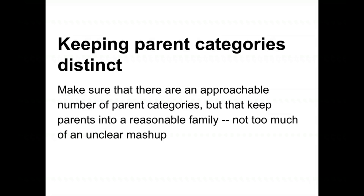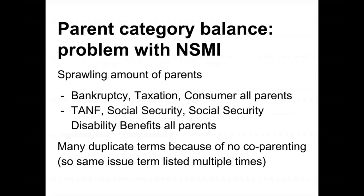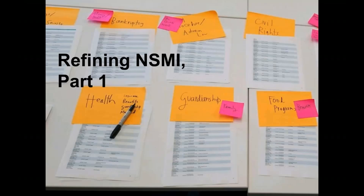The third factor is balance — having a good comprehensive amount of parent families without mashing them up too much. Right now NSMI has a pretty sprawling amount of parents: bankruptcy, taxation, and consumer are all separated; benefits are separated into different parent categories, like social security and social security disability being totally separate. If you go to NSMI's website, there's a very long list at the parent level, which makes it unapproachable. We've been thinking about how to make sensible mergers without over-mashing categories.